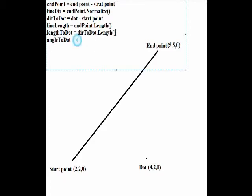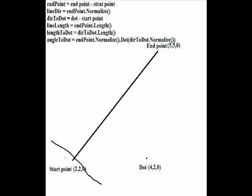To get the angle to the dot, we use the normalized value of the end point. If the angle is less than or zero, then the start point is the closest point, because that means that the dot is in the opposite direction of the line.